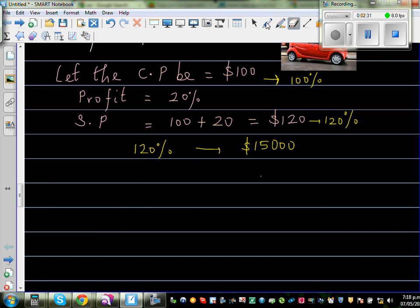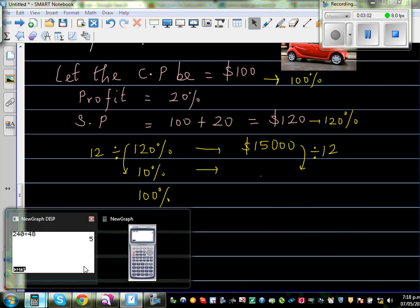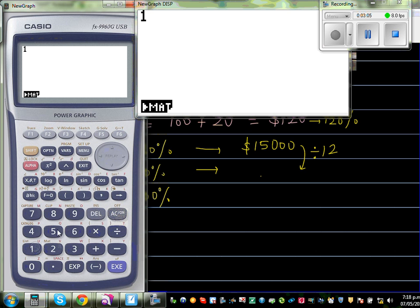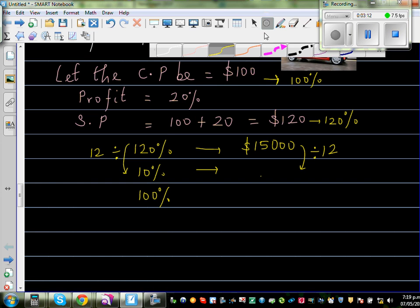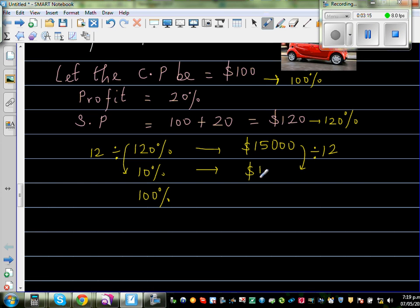So from 120%, can I find 10%? Okay, my ultimate aim is to find 100%. So 120%, from 120%, I can find 10% by dividing 120 by which number? So 120 divided by what gives you 10? So obviously, that has to be divided by 12. So to get this number, you do the same thing, 15,000 divided by 12. So let us get the calculators out, which is 15,000 divided by 12, which is $1,250. So 10% is $1,250.